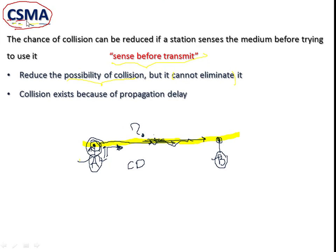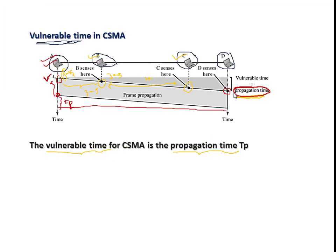Overall, in CSMA — Carrier Sense Multiple Access — multiple stations access the channel, but each station must check whether the medium is busy or idle before transmitting. If any carrier signal is propagating through the medium, the station must wait until it is free. Propagation time is the key factor for collision, which leads us to CSMA/CD.